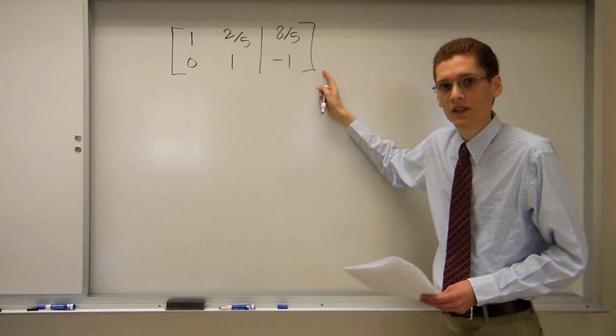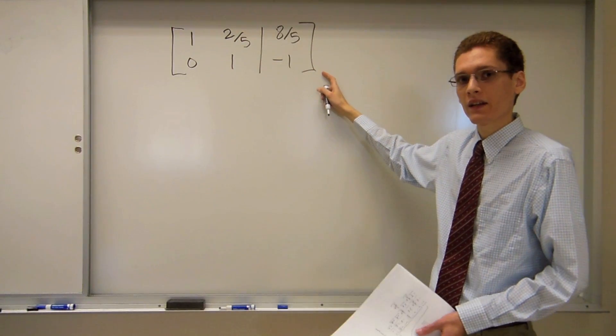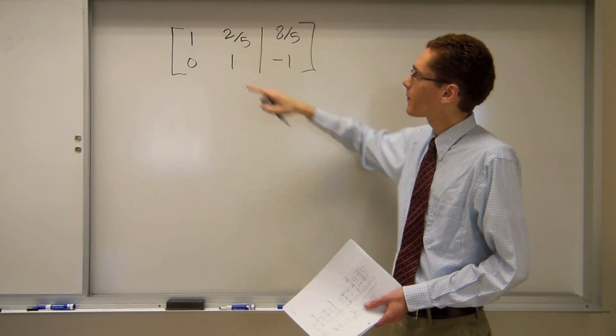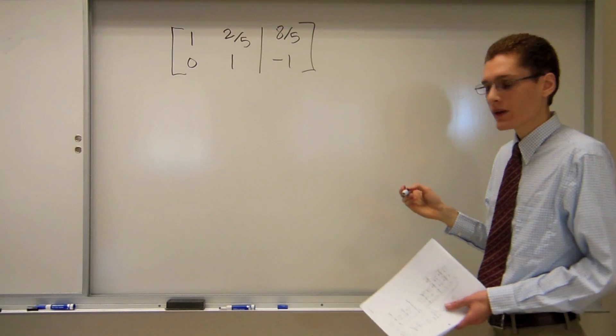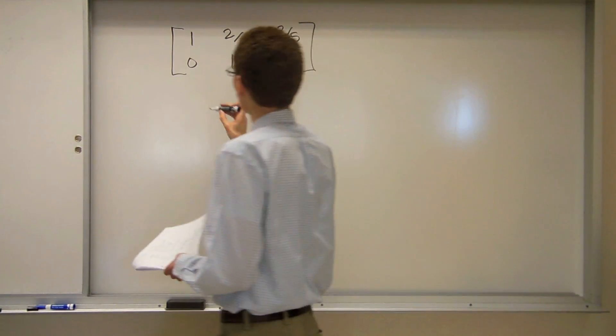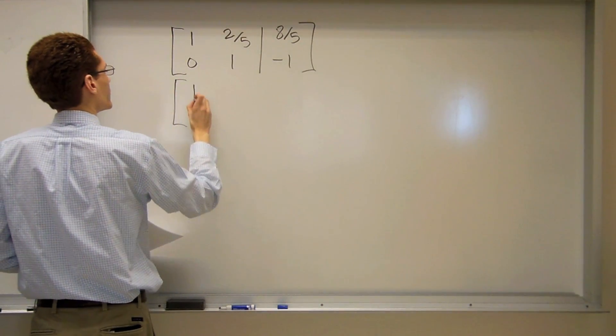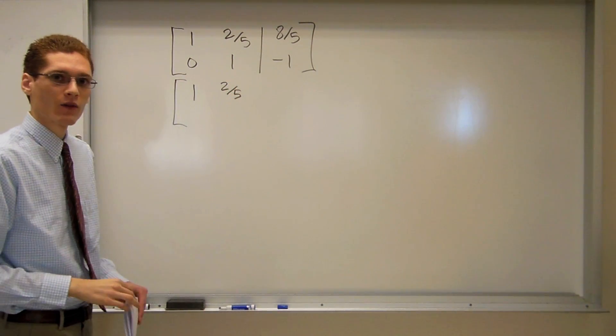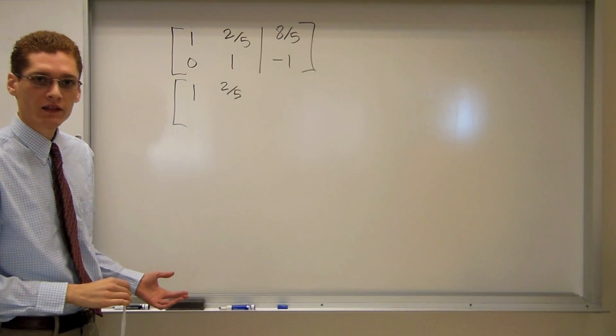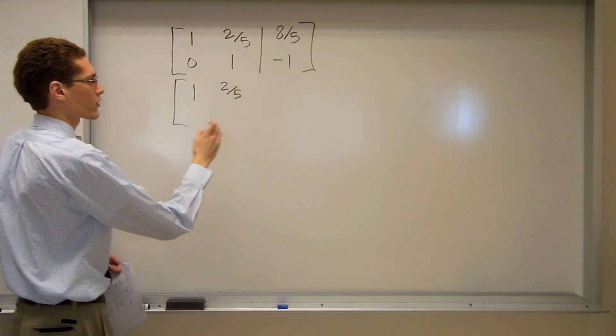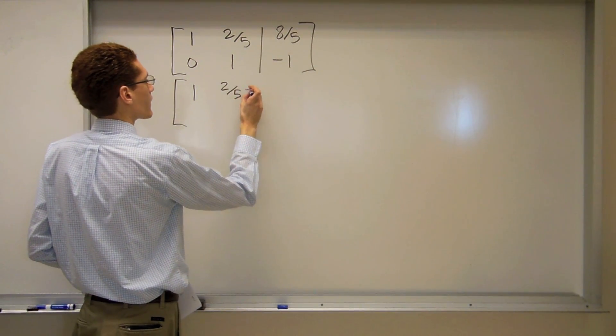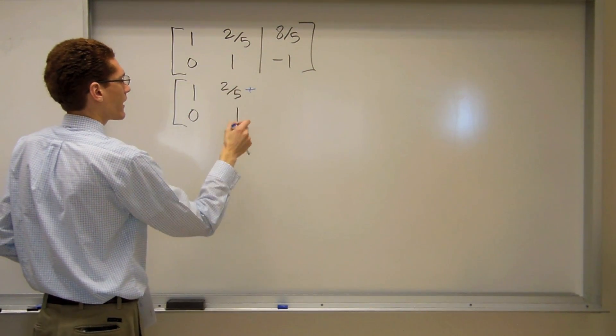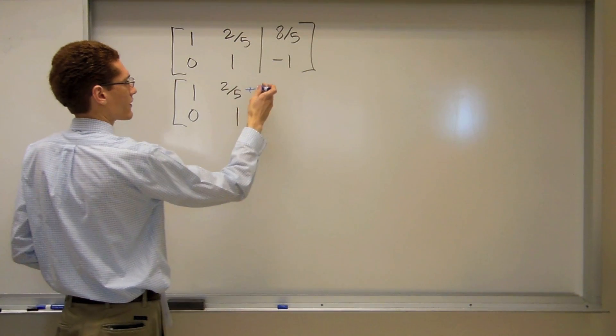So we have this matrix and we're still not quite yet in row echelon form because that 2 fifths should be a 0. So I'm going to use the third matrix operation and I need to somehow add negative 2 fifths or subtract 2 fifths.